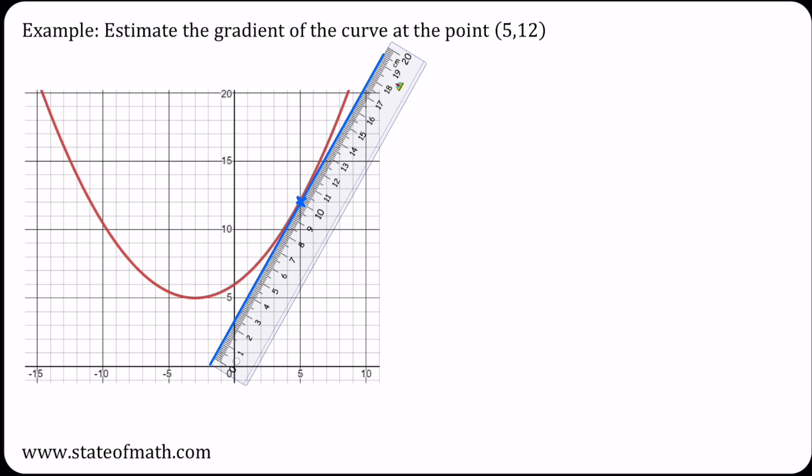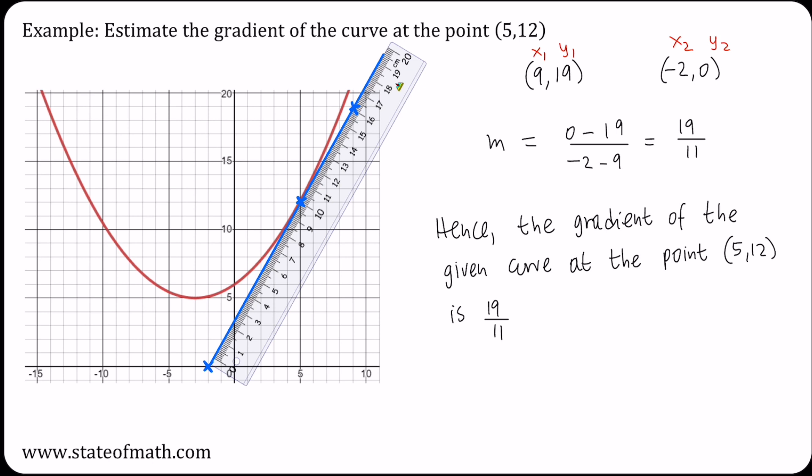I see that I pass through these two points here, it's the point with coordinates 9, 19 and the point negative 2, 0. So this is x1, y1, this is x2, y2. Therefore the gradient would be y2 minus y1 over x2 minus x1, which gives an answer of 19 over 11. We conclude that the gradient of the given curve at the point 5, 12 is 19 over 11.